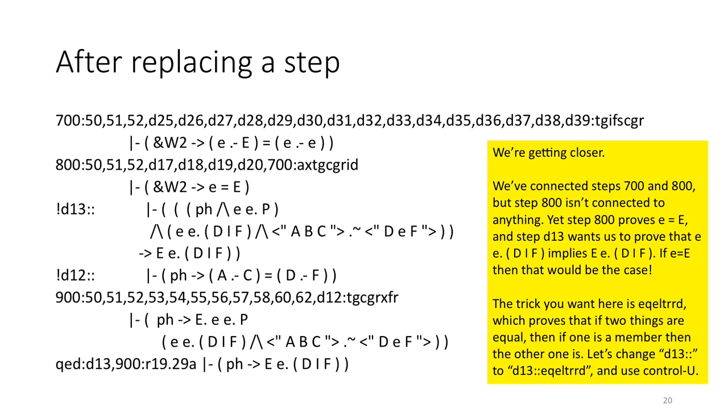We're getting closer. We've connected steps 700 and 800, but step 800 isn't connected to anything. Yet step 800 proves that little e equals big E, and step D13 wants us to prove that little e exists in DIF implies E exists in DIF. If little e equals big E, then that would be the case. The trick you want here is EQELTRRD, which proves that if two things are equal, then if one thing is a member, then the other one is. Let's change D13 to D13 colon colon EQELTRRD and use CTRL-U.